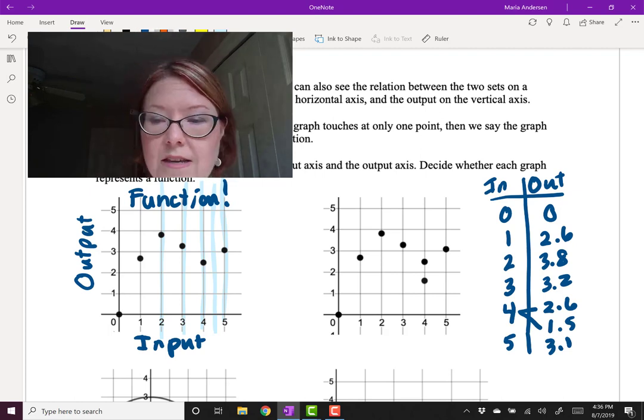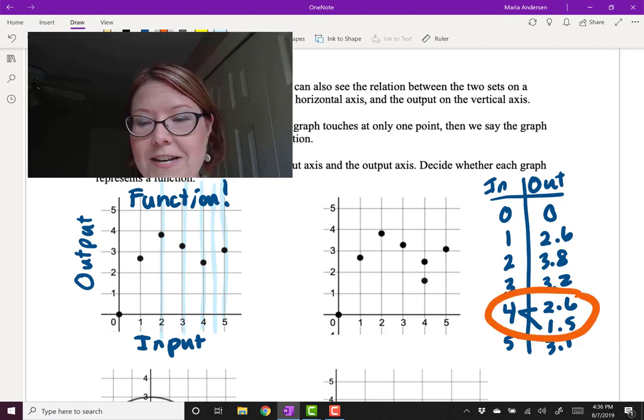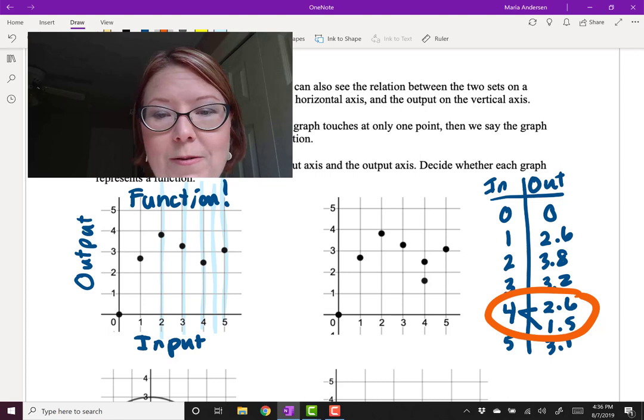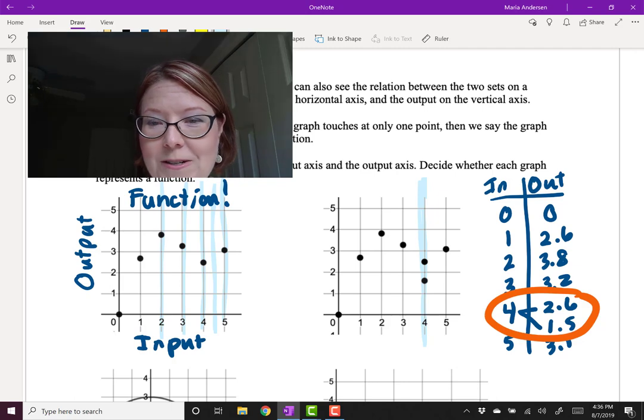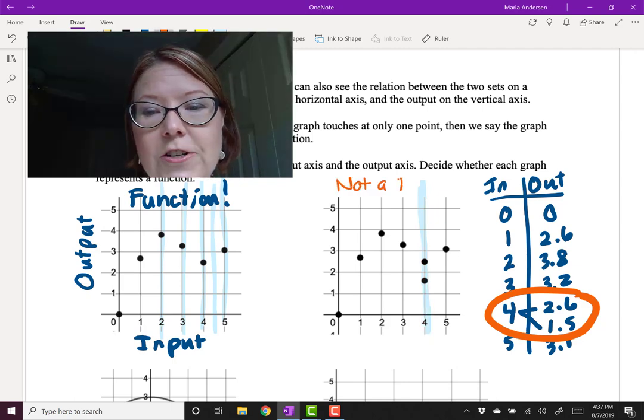Last I have 5, 3.1. So it's this two outputs for one input that causes the problem. And if we did a vertical line test, we can see the vertical line test fails at a value of 4. So this one is not a function.